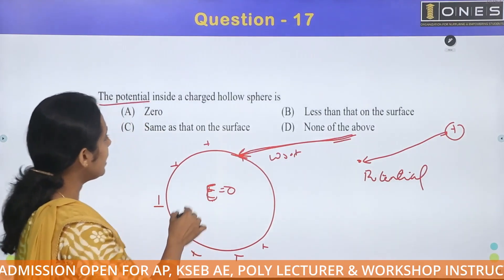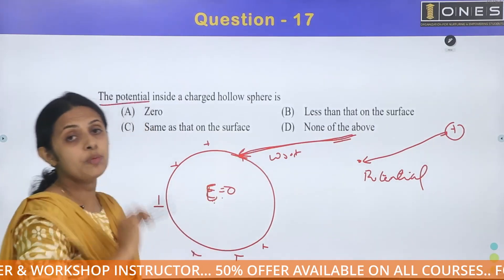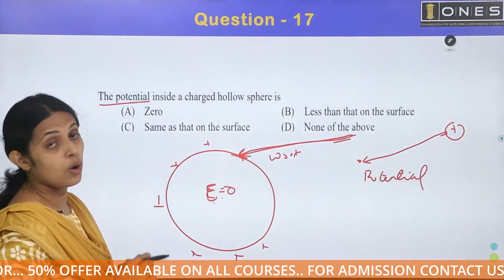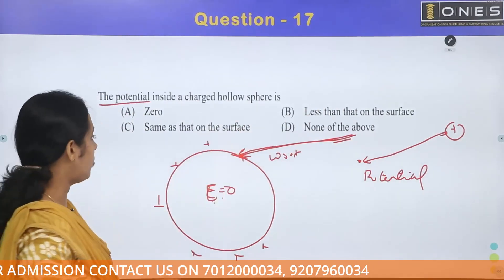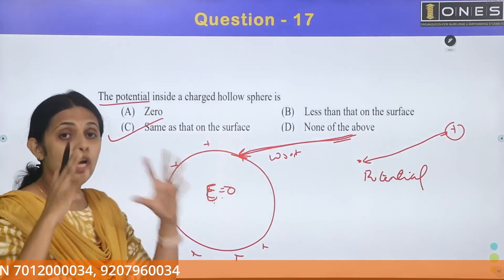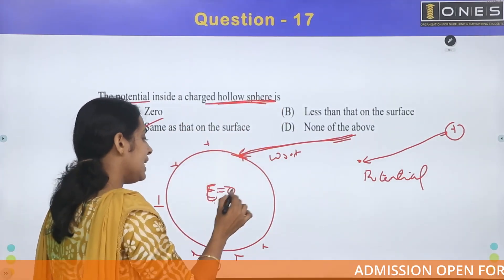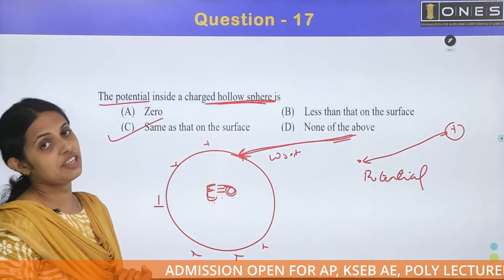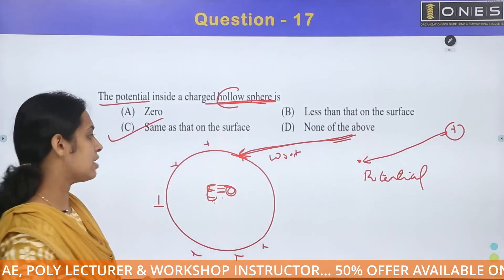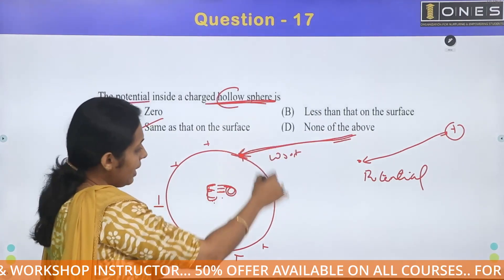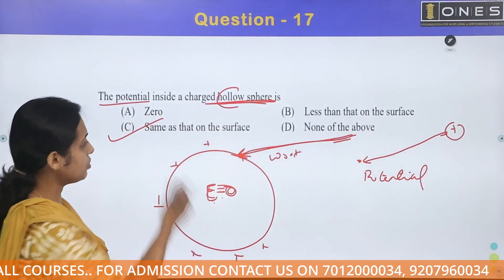Inside the charged hollow sphere, the surface and all interior points are at the same potential. Because the electric field inside is zero, no work is done moving a charge inside — so the potential inside is the same as that on the surface. The answer is: same as that on the surface.